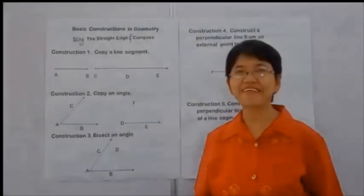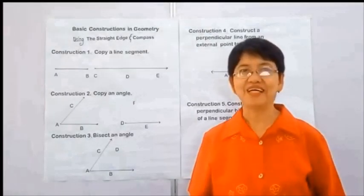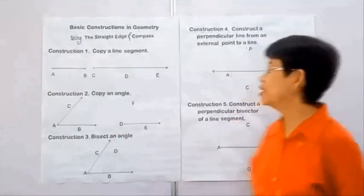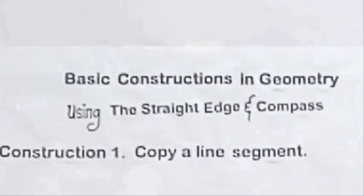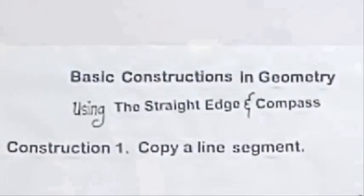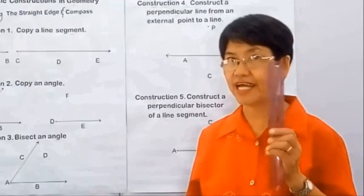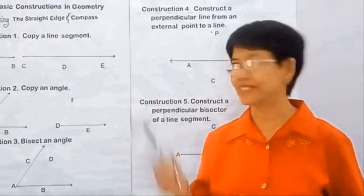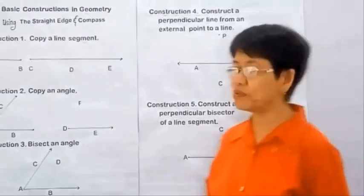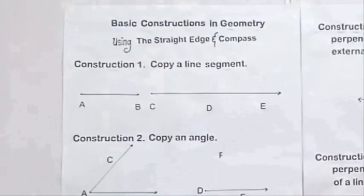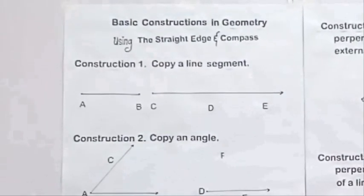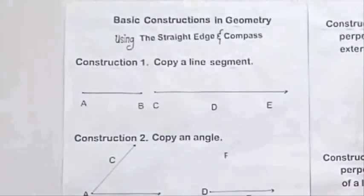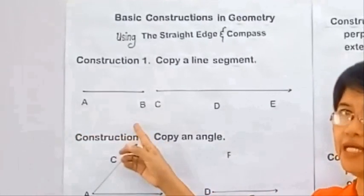Welcome to Math Alive. Our lesson for today is basic constructions in geometry using a straight edge and a compass. Construction number one: copy a line segment. We will copy line segment AB.